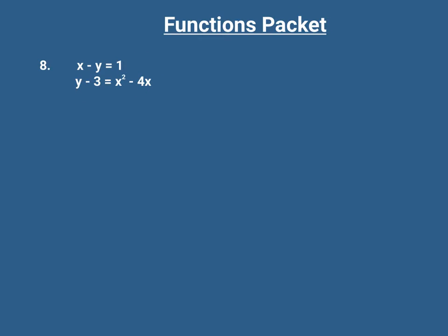The reason it's a system of equations is because we have two equations in two variables. Both equations contain a y and an x, and our goal is to figure out what values of x and y hold true in both of these two equations. The first thing you want to do is get either x or y by itself in either one of the two equations — it totally does not matter.